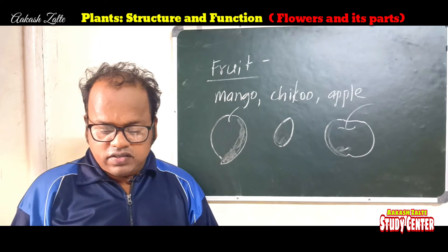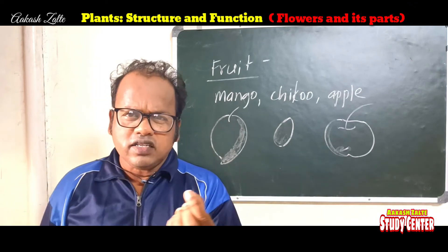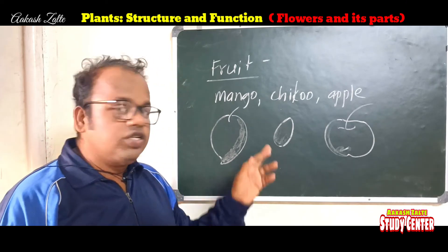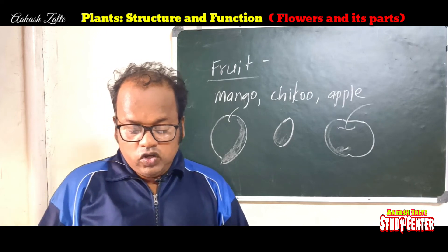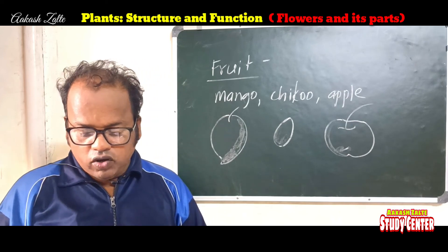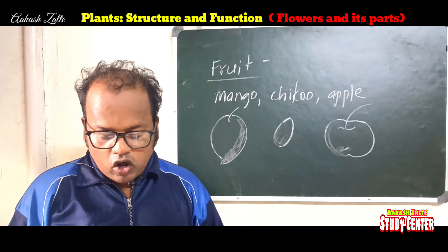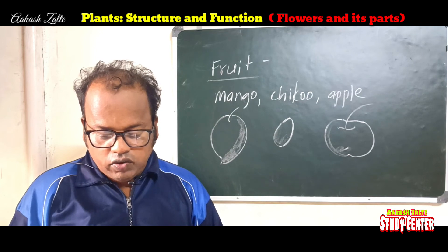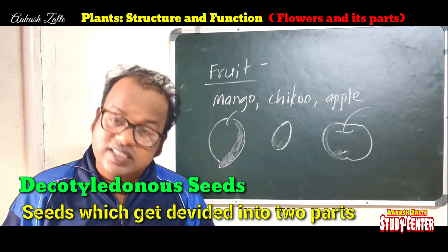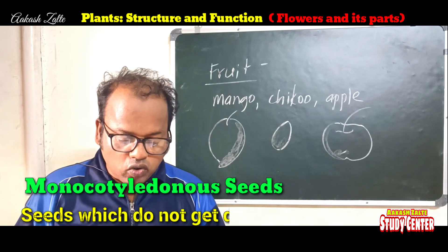Observe the fruits of ber (ziziphus), mango, chiku, apple, etc. Apple has small seeds — maybe five, six, or seven. But chiku has only one seed. Soak the seeds of pea, wheat, rice, jowar, and groundnut in water for three to four hours, then press the seeds with your finger and observe them. Which seeds get divided into two equal parts? The seeds which get divided into two parts are called dicotyledonous seeds. And seeds which do not divide into two equal parts are called monocotyledonous seeds.